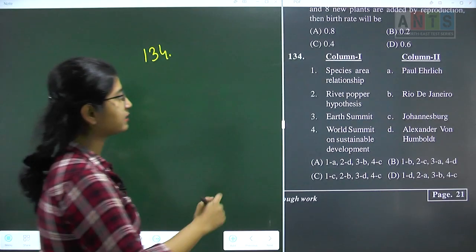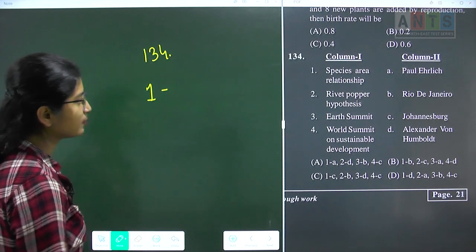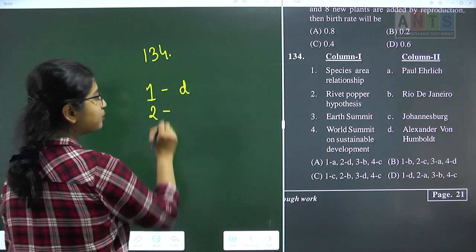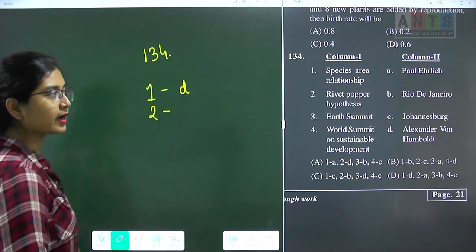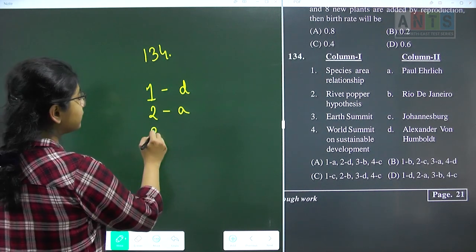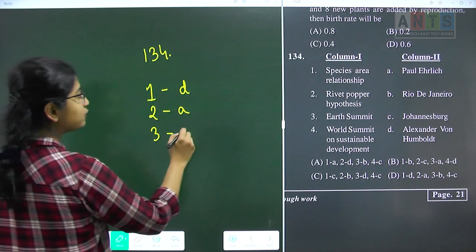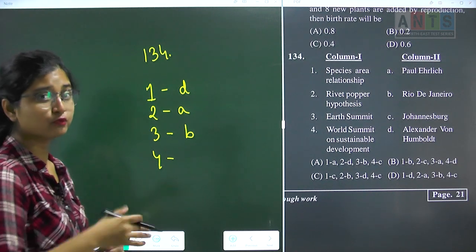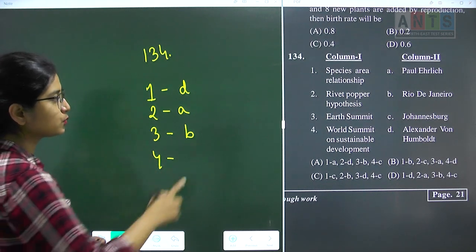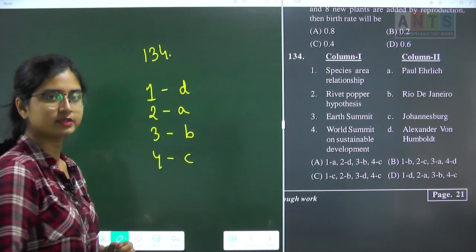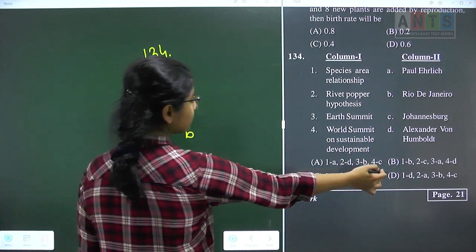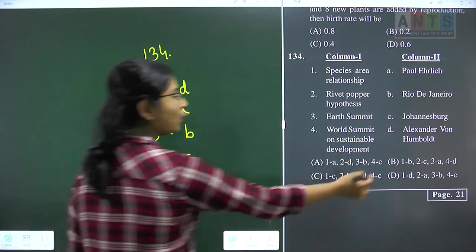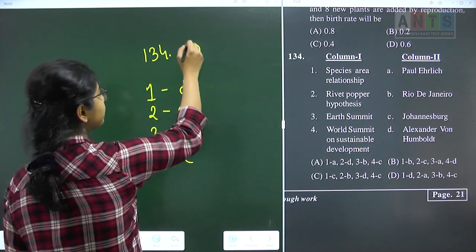Question 134: match the following. Species-area relationship was proposed by Alexander von Humboldt — 1D. The rivet popper hypothesis was proposed by Paul Ehrlich — 2A. The Earth Summit was held in Rio de Janeiro — 3B. The World Summit on Sustainable Development, a follow-up to the Earth Summit, was held in Johannesburg — 4C. Code: 1D, 2A, 3B, 4C. Question 134 answer is option D.